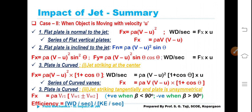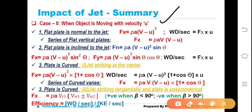Further, when the object is moving — so far the summary covered stationary plates: flat plate, curved plate, when held normal, when held inclined, etc. Now we will see when the object is moving with velocity u. We will consider first a flat plate held normal to the jet. Then Fx is equal to rho·a·(v − u)². Work done per second — in the previous case, since it was stationary, work done is zero, because when nothing is moving, no work is done.